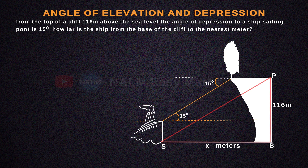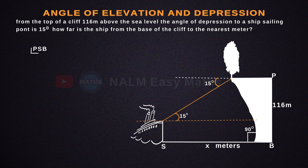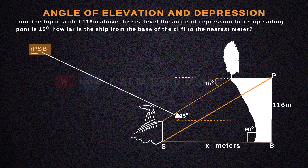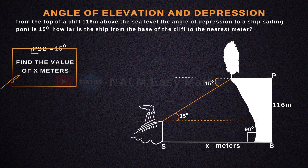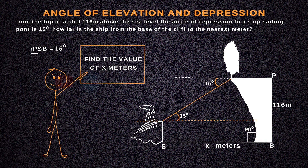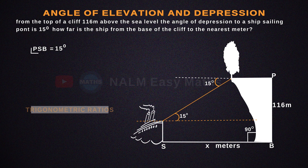This is a right triangle, so the angle at the base of the cliff, B, is 90 degrees. If angle PSB equals 15 degrees, to find the value of X in meters, we will use trigonometric ratios.